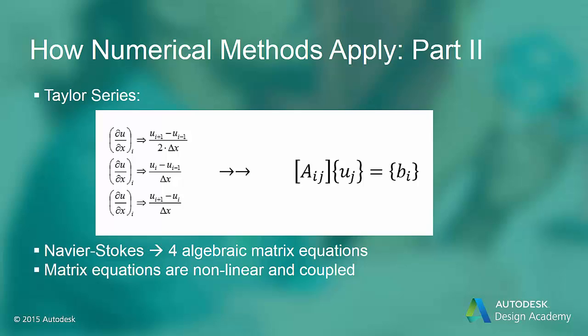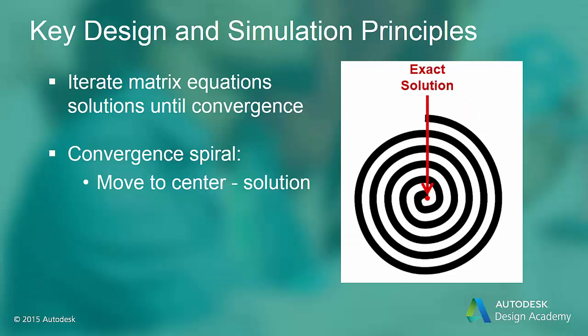These matrix equations are still non-linear, in the sense that the terms in the A matrix depend on the U values. Each of the matrix equations are coupled to the other matrix equations through the variables velocity and pressure. Because the system and matrix equations are non-linear and coupled, the numerical solution is obtained by iterating through the solution of the matrix equations. Convergence is achieved when variables show increasingly smaller variations with respect to the previous iteration. If a computation moves toward convergence, it is said to be analogous to a spiral, where each successive solution of the matrix equation moves toward the center of the spiral, and hence successive computations bring us closer to the answer.